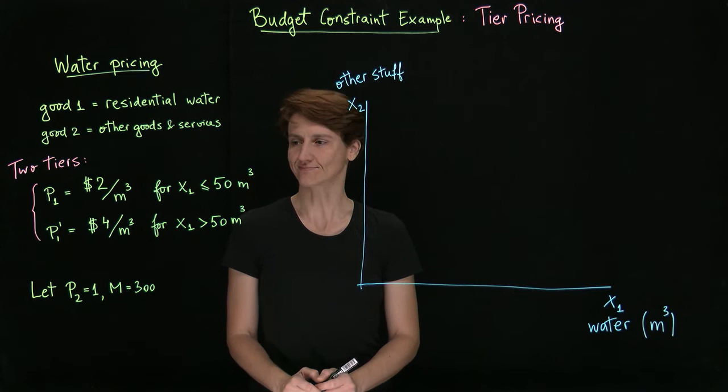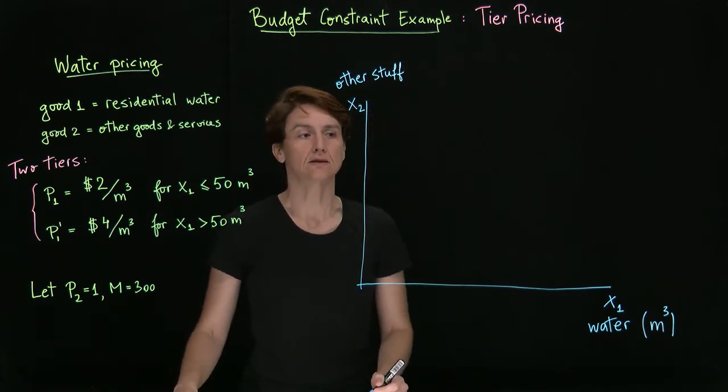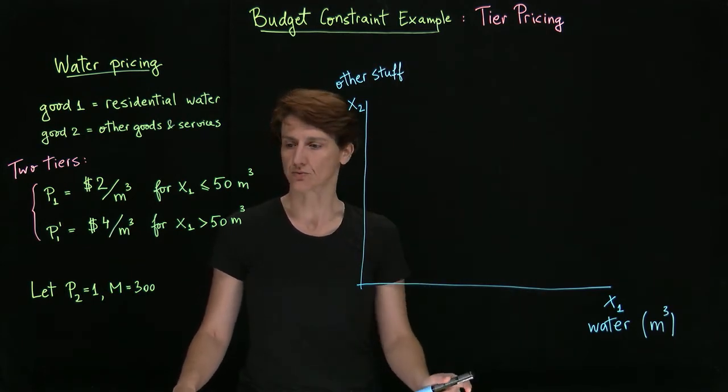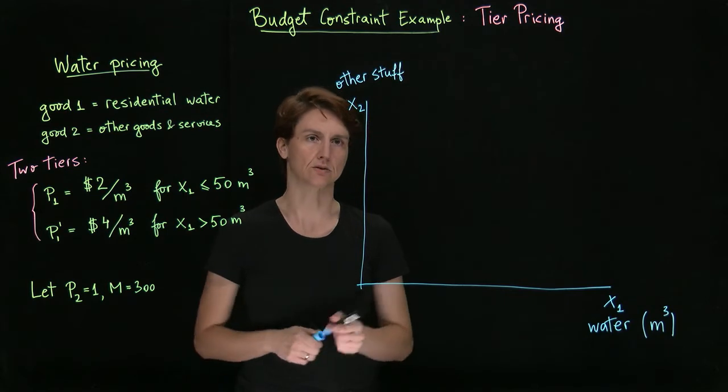Okay, so let's go ahead and get started. First, if we didn't consume any water, how much of other stuff would we be able to buy? Well, it would be 300 units.